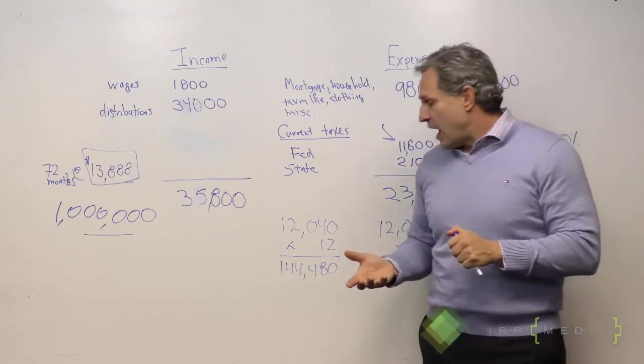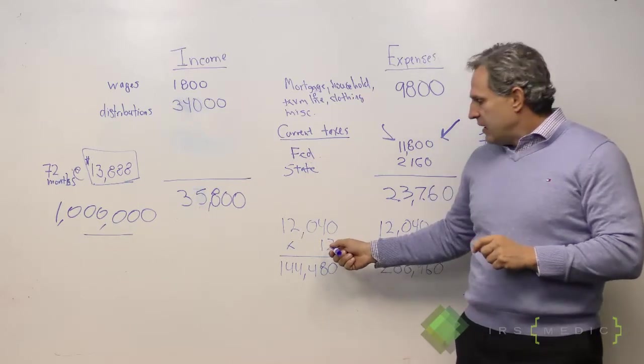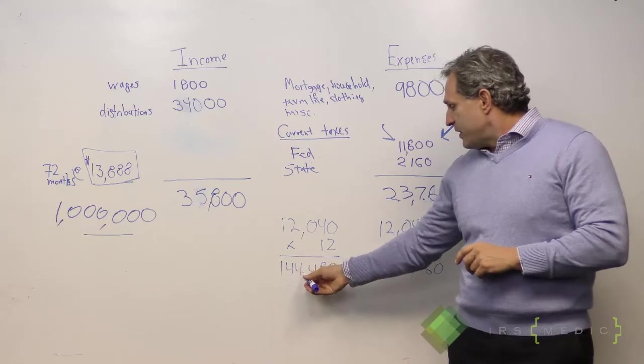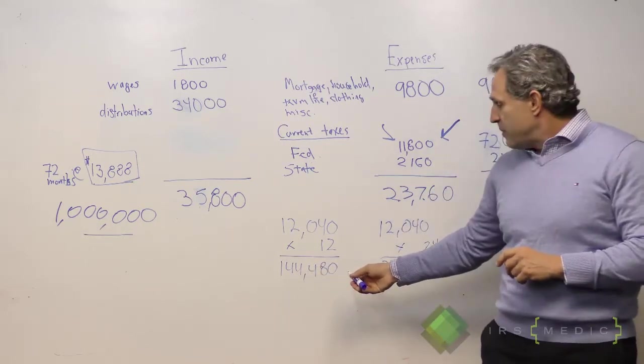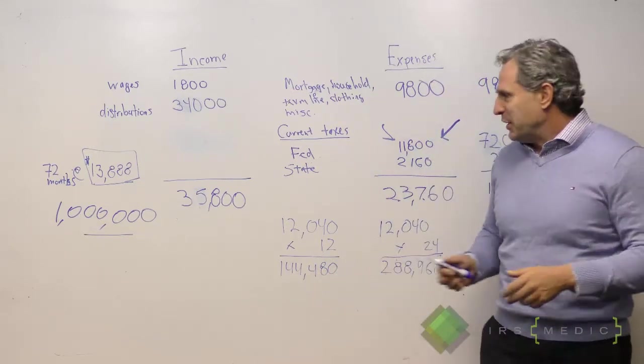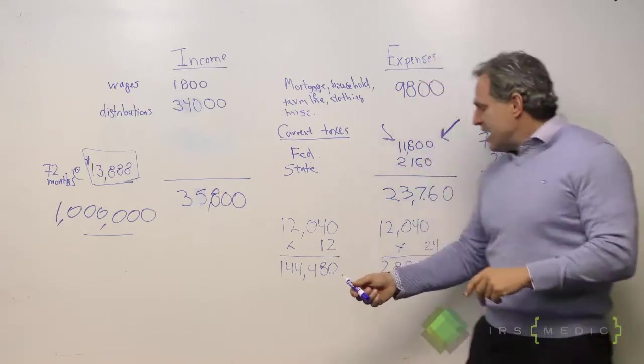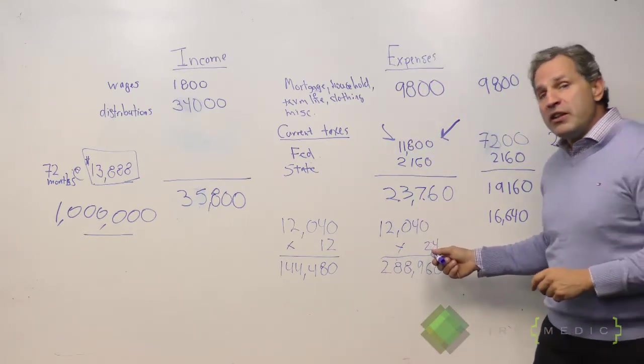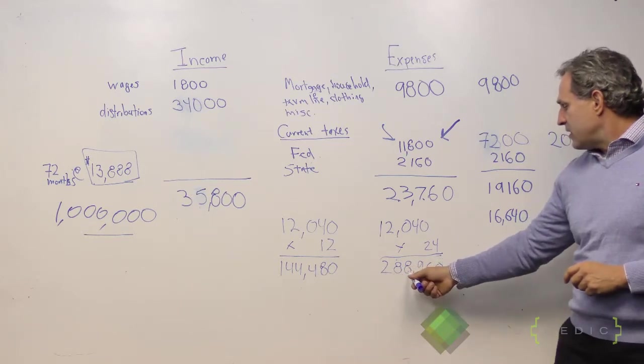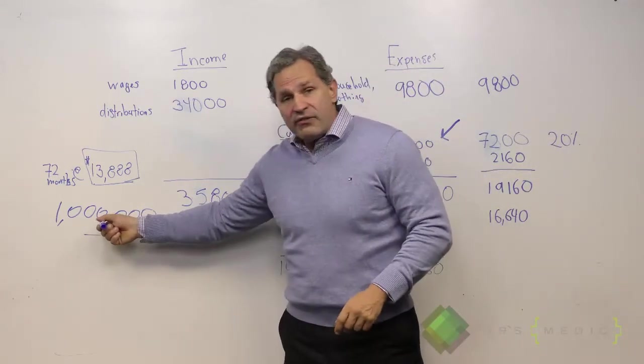When we're calculating an Offer in Compromise, we can go one of two ways generally. Multiply that by 12, if he can pay that in full, then his Offer in Compromise would be $144,480. Not too bad. He's trying to see if he can borrow that money from his mom. He's the successful attorney looking for a little loan from mom, so he doesn't know quite yet. He just might go with the 24-month repayment and just do double, $288,960.